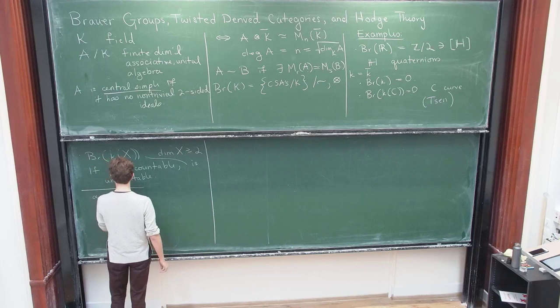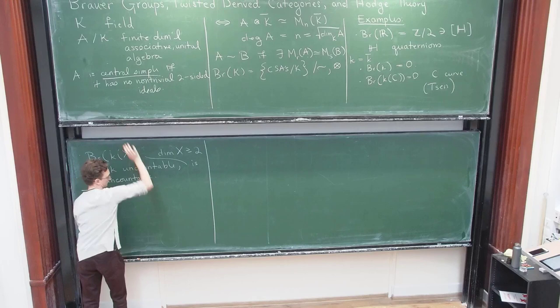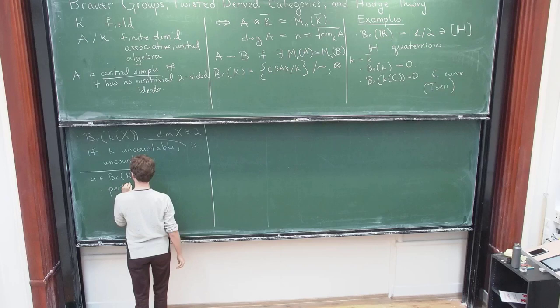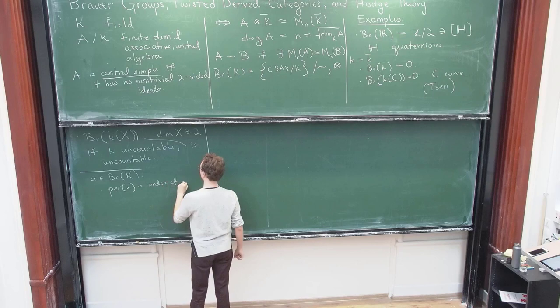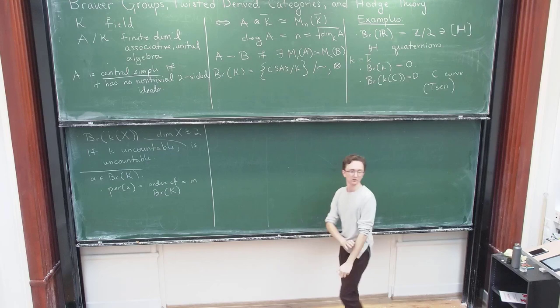So if I take the class in the Brouwer group of any field, you can consider, you can consider the period, which is simply the order of alpha in the Brouwer group. And I didn't say it before, but the Brouwer group is a torsion group. This is always finite.